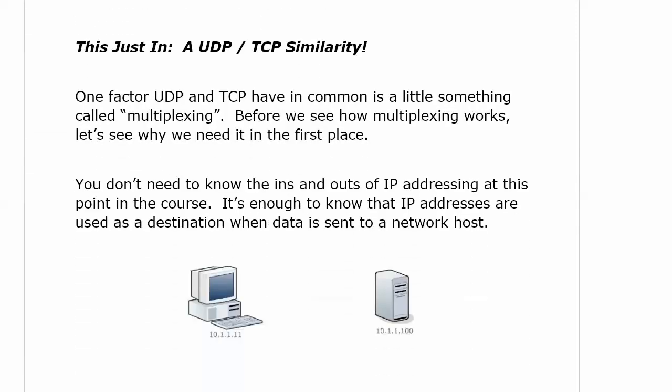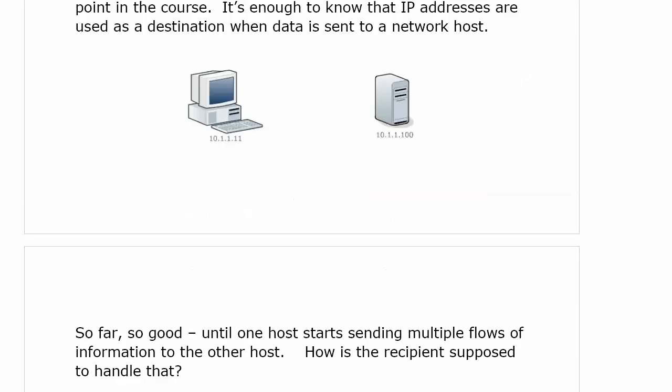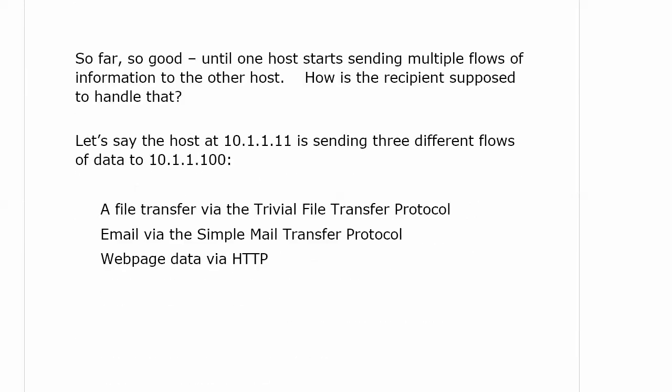Now, UDP and TCP have a little something called multiplexing in common. Before we see how it works, let's talk about why we need it in the first place. IP addresses are used as a destination when data is sent to a network host. We know our packets have an L3 address and frames have an L2 address.